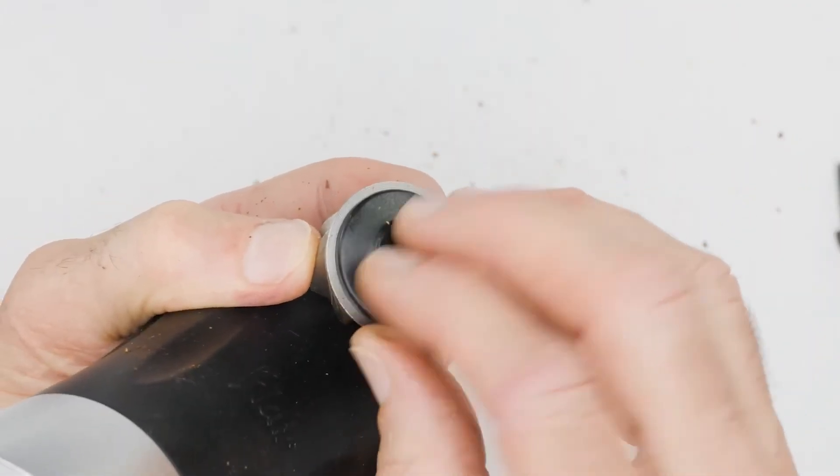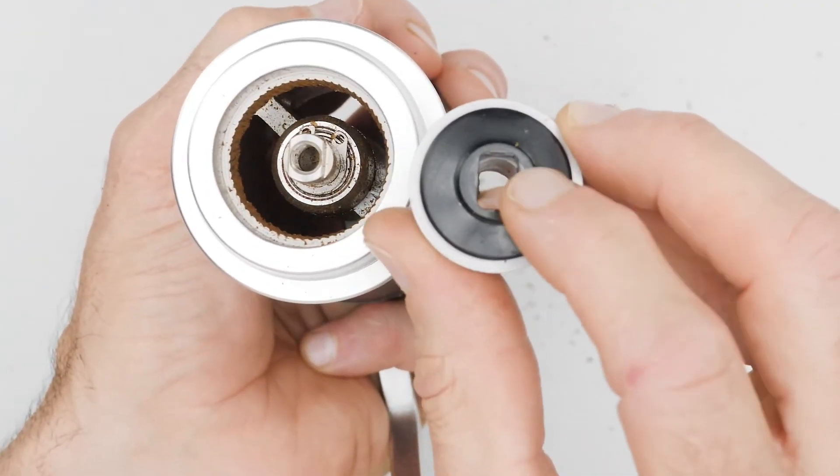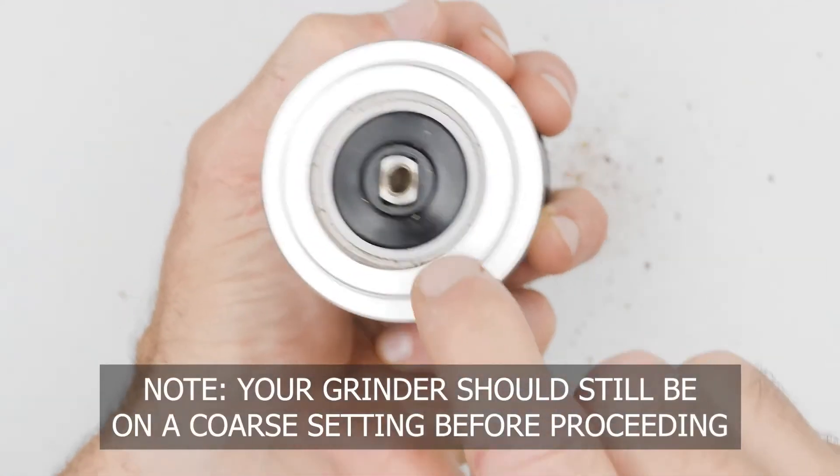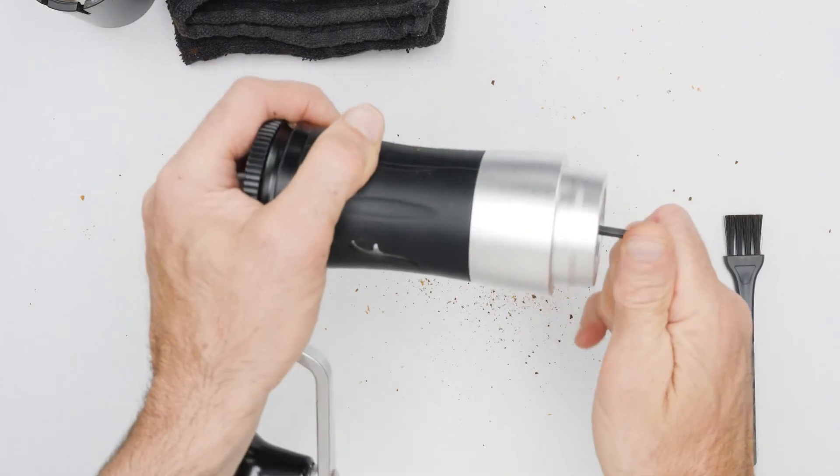Align and insert the prongs into the holes on the bottom of the burr. Align the flats on the axle with the flats on the burr retainer during installation. Tighten the bolt to secure them to the axle.